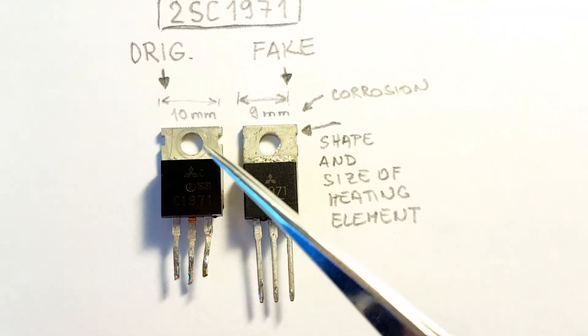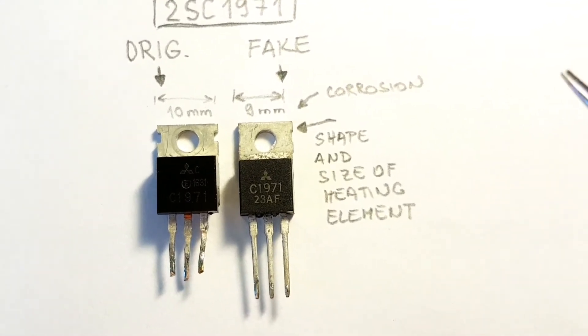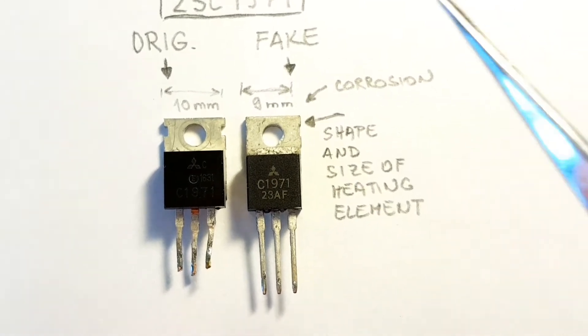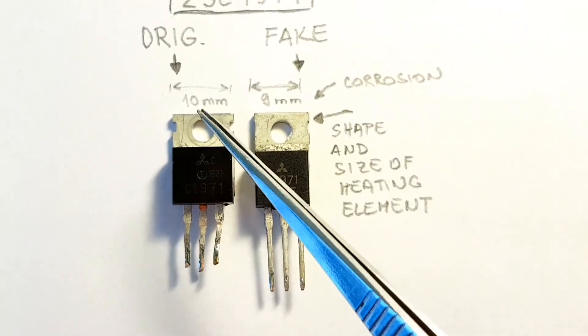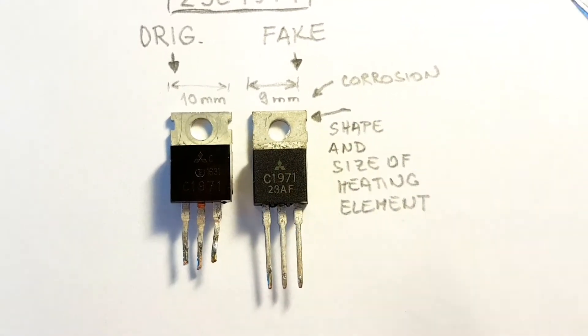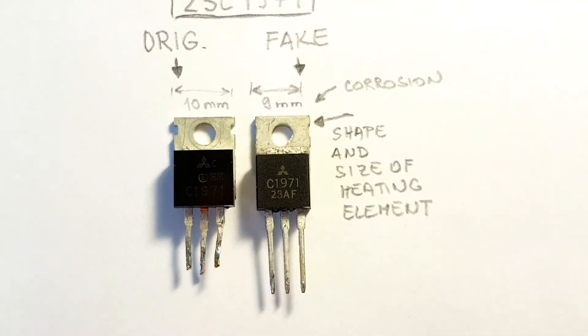The biggest difference is the size of the body or the shape of the heating element. As you can see, the original one has 10 millimeter and the faked one has only 9 millimeter wide.